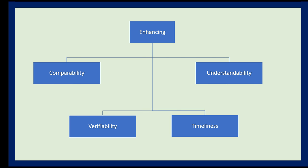Comparability has two kinds: intra-comparability and inter-comparability. Intra-comparability means comparing your own financial statements across different years — for example, 2017 versus 2016. Inter-comparability means comparing your financial reports to other companies within the same industry. You compare food companies with food companies, for example — you cannot compare an airline company with a construction company.